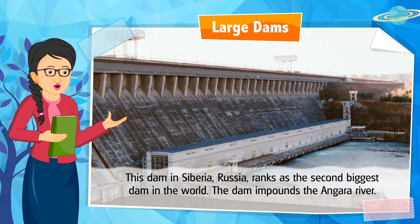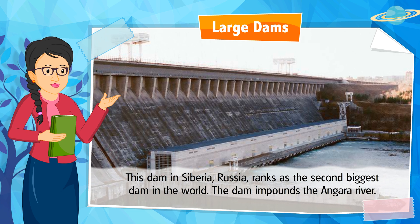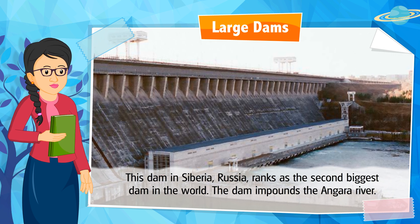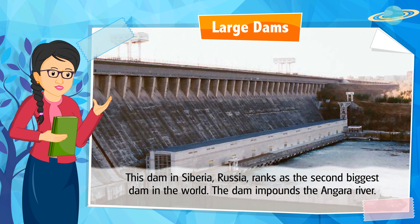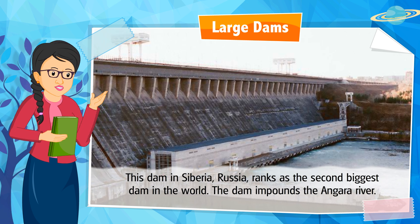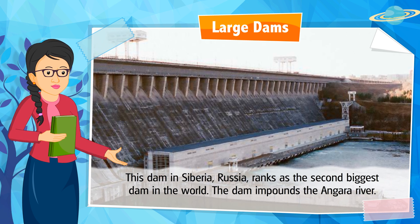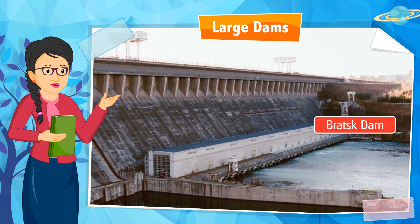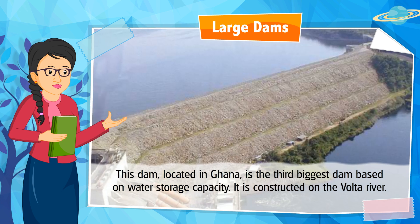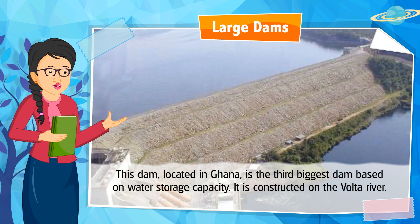This dam in Siberia, Russia ranks as the second biggest dam in the world. The dam impounds the Angara River. Can you identify the name? It is Bratsk Dam.